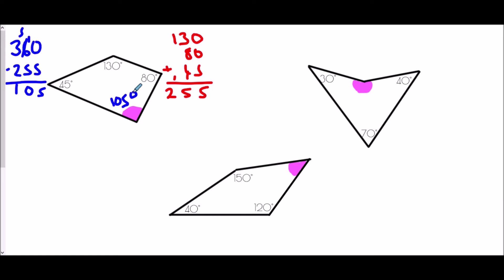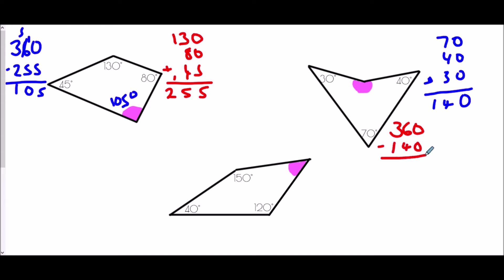The next shape is a delta, and we have a 30 degree angle, a 40 degree angle, and a 70 degree angle. Adding those three together: 7 plus 4 is 11, plus 3 is 14 — so 140 degrees. To find the missing angle I subtract 140 from 360, giving 220 degrees. Because this is a large angle — a reflex angle beyond 180 degrees — that 220 must be correct.